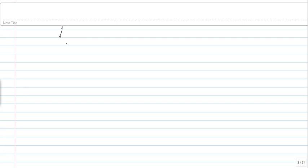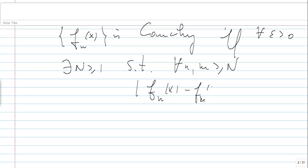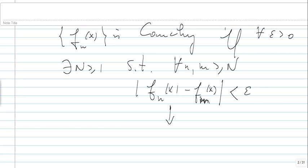So what does it mean that F_n(x) is Cauchy? It means: for every epsilon positive, there exists an N ≥ 1 such that for every n and m greater than N, the absolute value of F_n(x) minus F_m(x) is less than epsilon. This is the same as F_n(x) minus F_m(x) being between minus epsilon and epsilon.